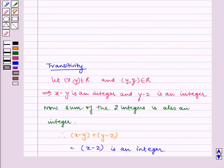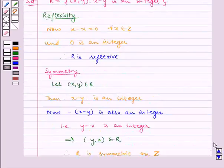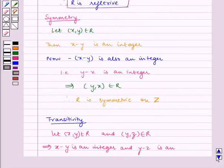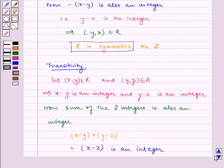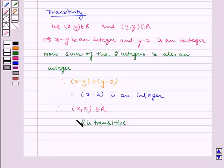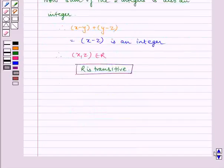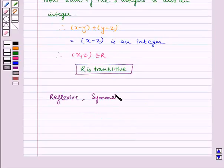Therefore, we can say that R is reflexive, R is symmetric and R is transitive. Therefore, the required answer is reflexive, symmetric and transitive.